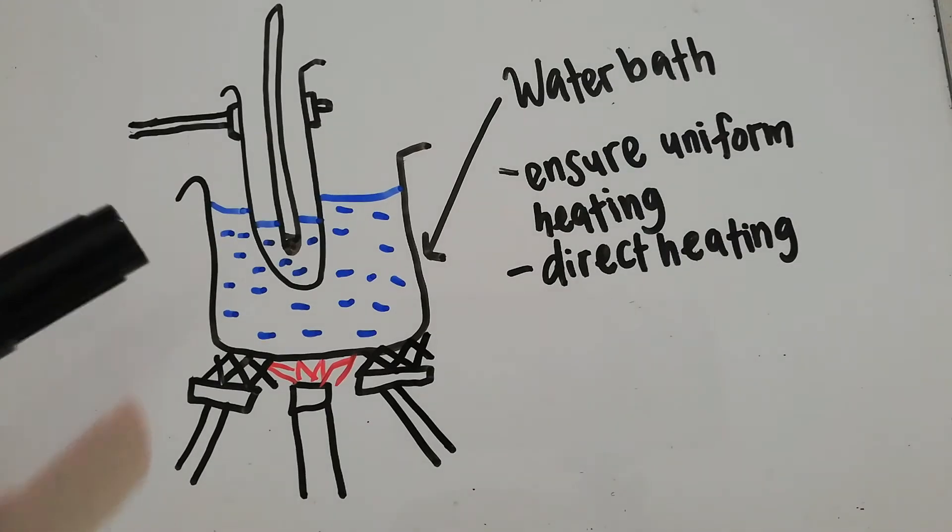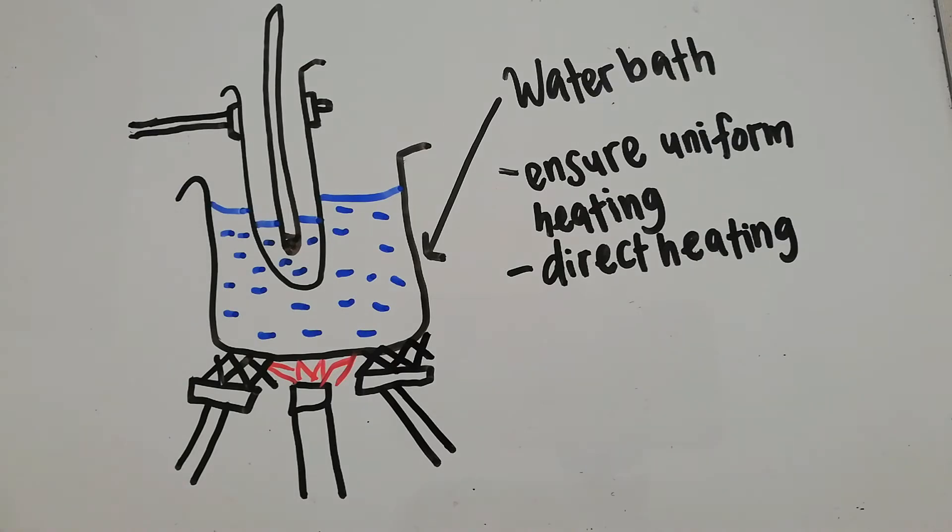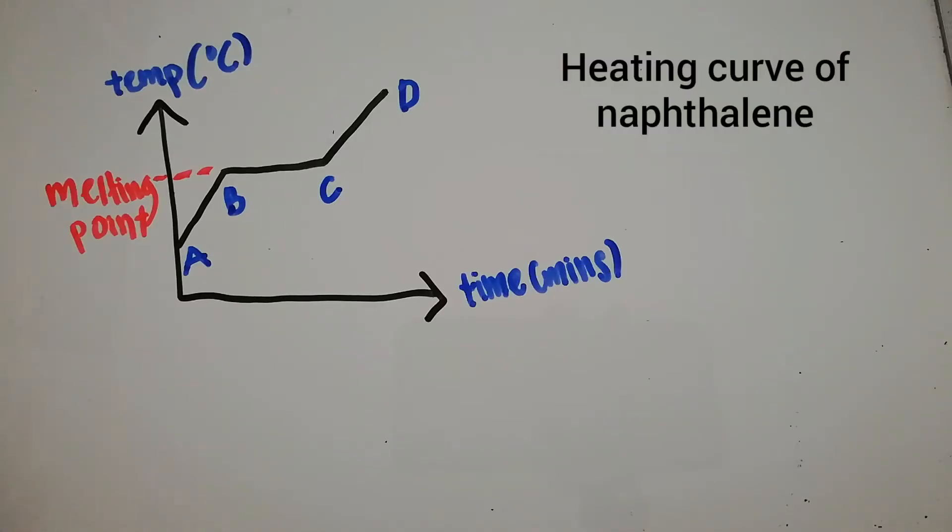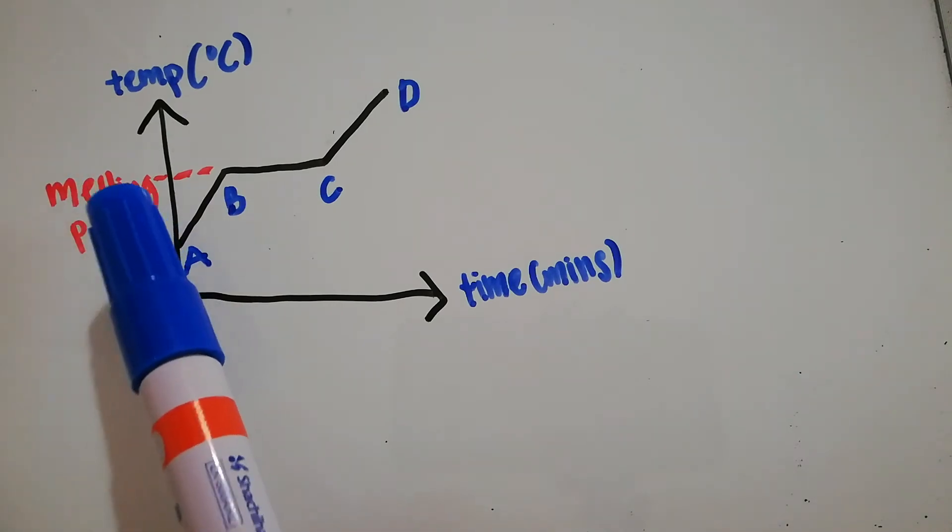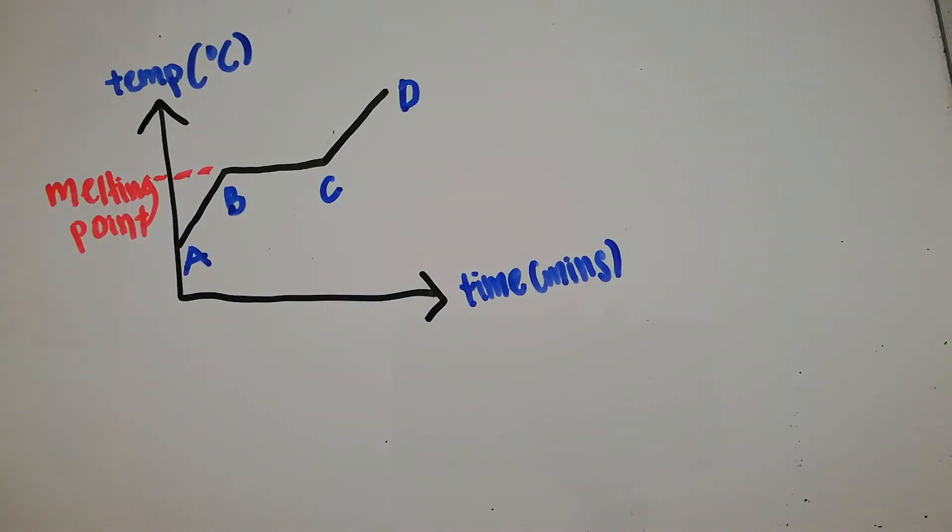The naphthalene inside the test tube should be stirred so that the substance can be heated evenly. This is the heating curve of naphthalene. There's an X axis which is time and Y axis is temperature. We started to discuss from A to B first.